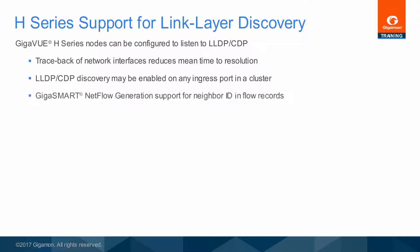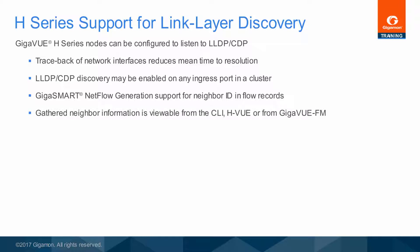The neighbor name obtained from discovery can be included in each flow summary sent by GigaSmart NetFlow generation in place of the GigaView port ID, in order to more clearly identify the origin of the flow record. In addition to support for SNMP and API polling of the discovery protocol information, the nearest neighbor list can be viewed through the command line interface, through the HVUE web interface, and through the fabric manager interface.